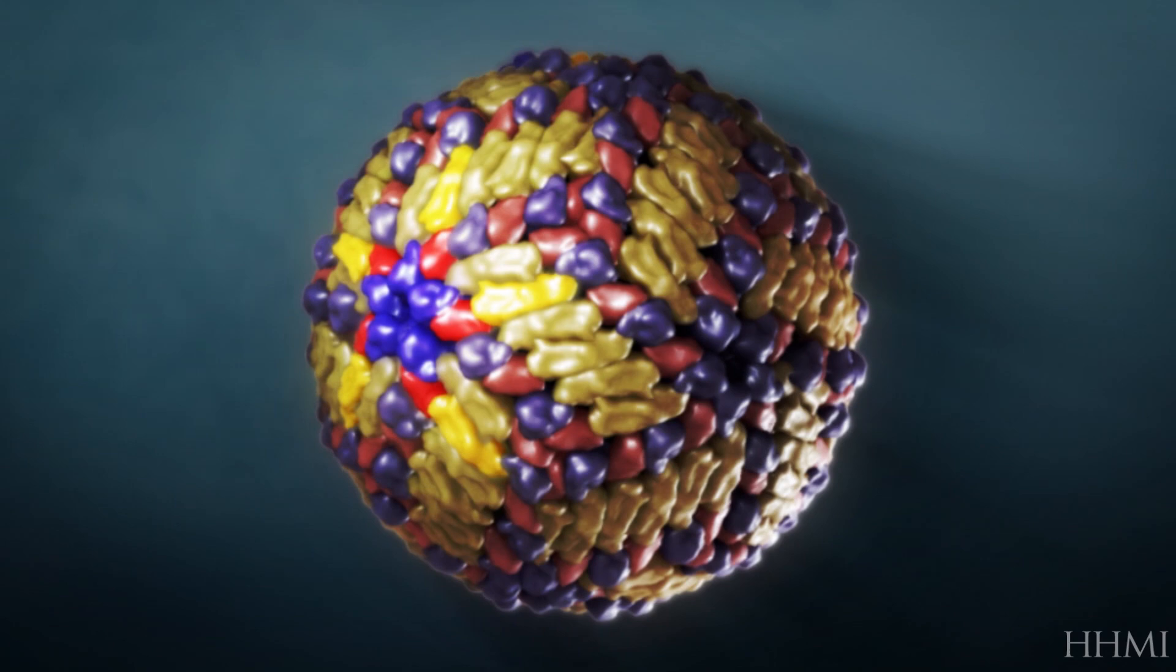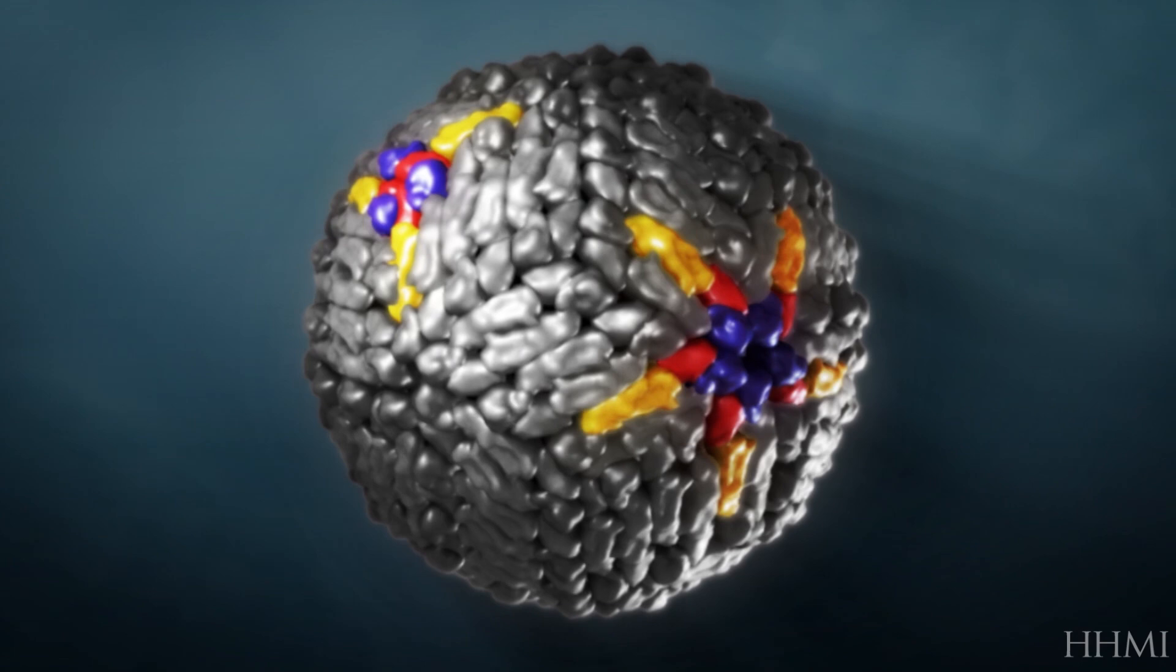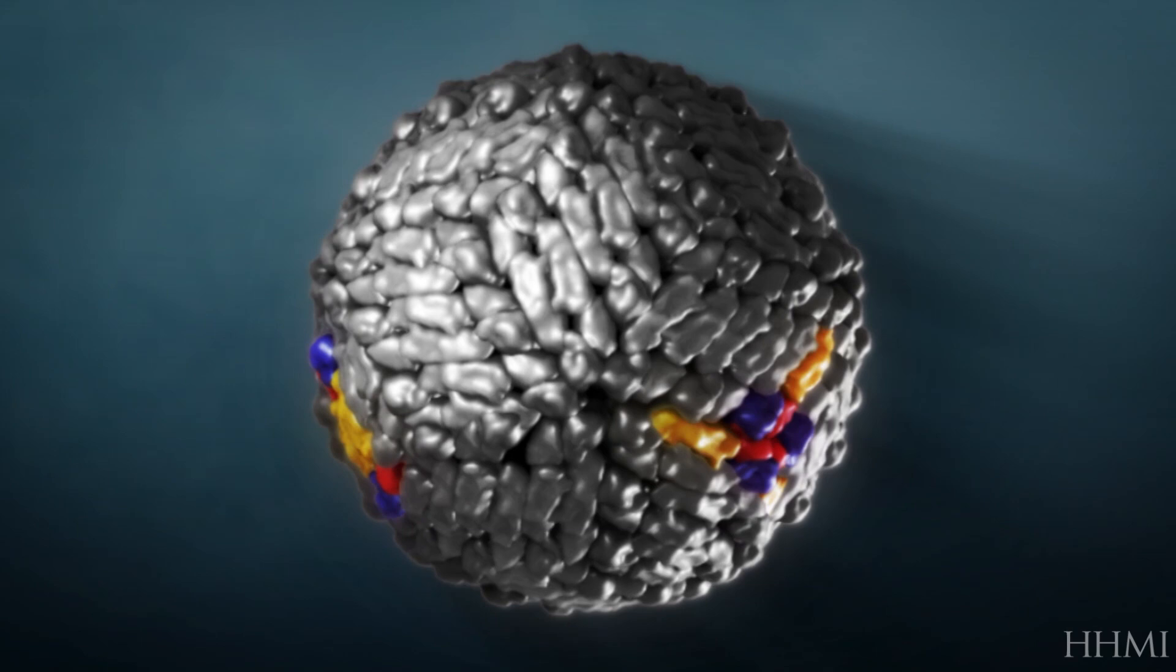If you rotate it very carefully, I'm going to highlight for you the pentamer that's at each vertex. So there it is there. And if you're very sharp, you can spot a threefold axis of symmetry. This corresponds to the center of each of the triangular faces.